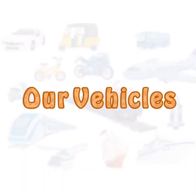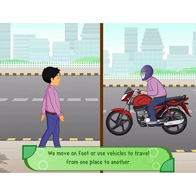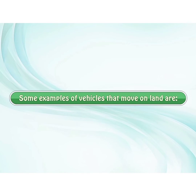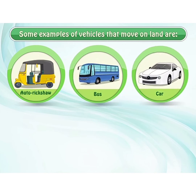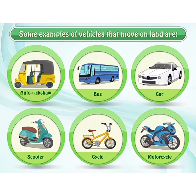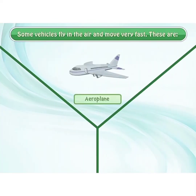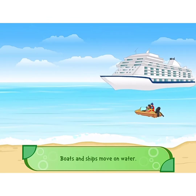Our vehicles. Moving from one place to another is called travelling. We move on foot or use vehicles to travel from one place to another. Some examples of vehicles that move on land are auto rickshaw, bus, car, scooter, cycle and motorcycle. Trains and metro move on tracks. Aeroplanes, rockets and helicopters fly in the air and move very fast. Boats and ships move on water.